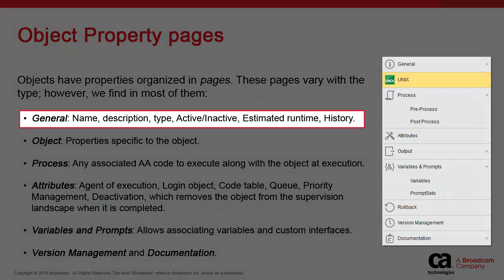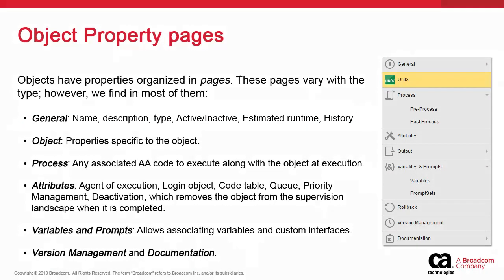The ubiquitous General page stores the name of the object, the title field allowing you to add a description — which we recommend — the history of the object, the ability to deactivate it, and classification tools called metadata, among other things.